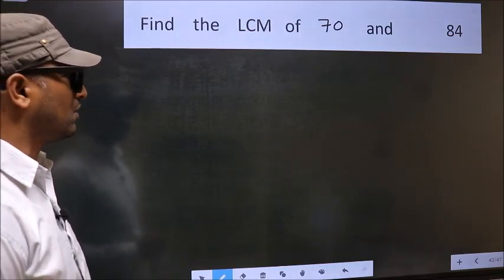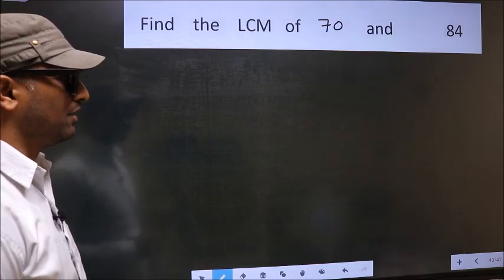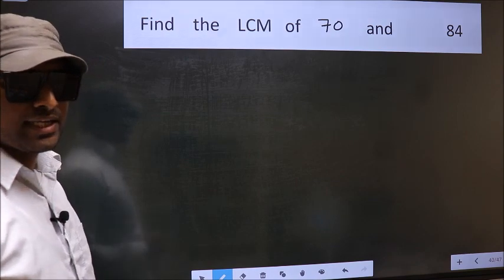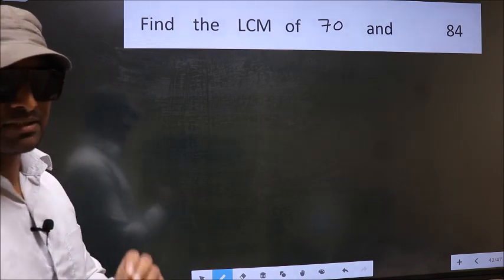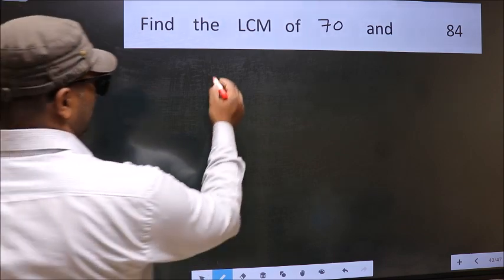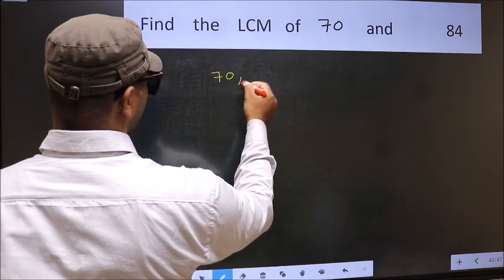Find the LCM of 70 and 84. To find the LCM, we should frame it in this way: 70, 84.